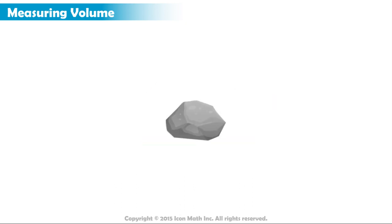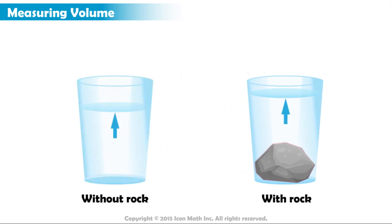This rock has volume because it occupies space. If you put this rock into a cup of water, you will notice that the level of the water rises. The water is displaced because the rock occupies space in the cup and it forces the water to move out of its way.